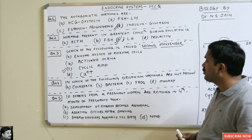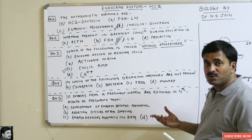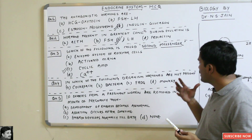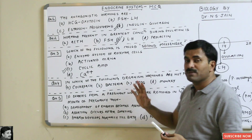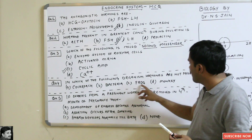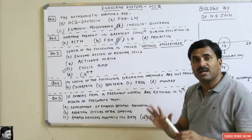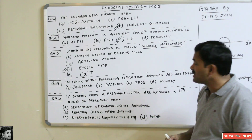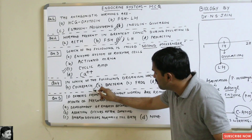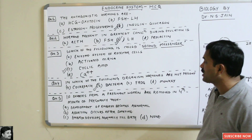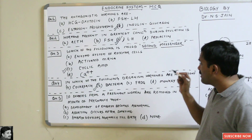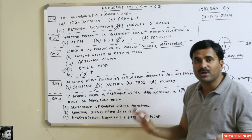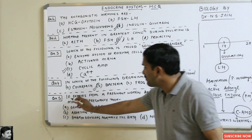Question number four: in which organism are hormones not present? The options are cockroach, bacteria, frog, and monkey. Always remember there are no hormones secreted in prokaryotes such as bacteria. So option B is correct — bacteria do not have any hormones in their body.